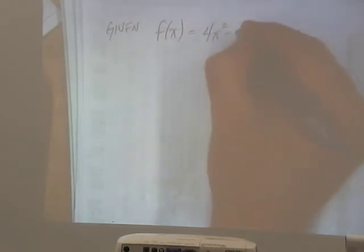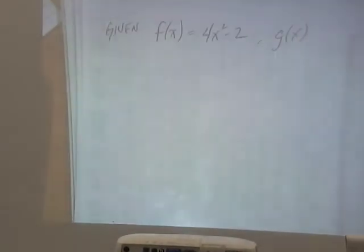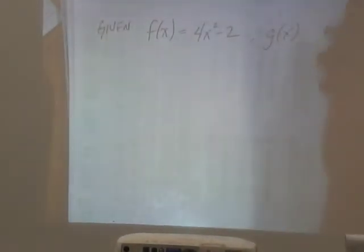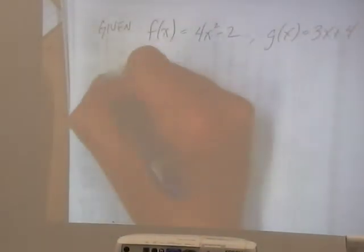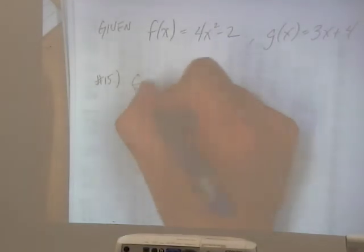Alright. Number 15. We're given f of x is equal to 4x squared minus 2. And g of x is equal to 3x plus 4.